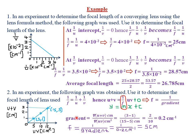Therefore, the focal length equals 1 over the gradient. Our first task is to find the gradient of that graph. Picking two points — (15, 3) and (5, 1) — the gradient is change in y over change in x, which here is change in (u + v) over change in uv.